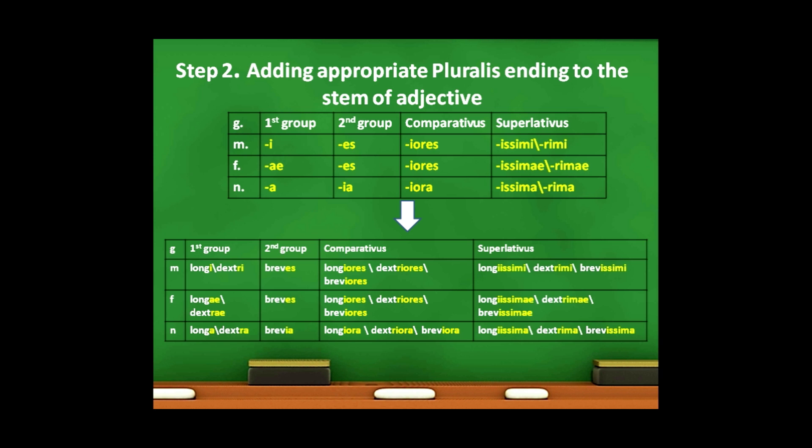For comparativus forms: masculinum pluralis — longiores, dextriores, breviores. Femininum pluralis — longiores, dextriores, breviores. Neutrum pluralis — longiora, dextriora, breviora.